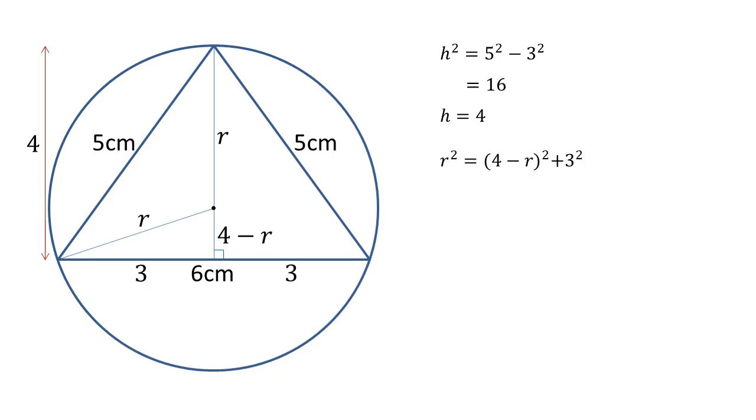Expanding the bracket on the right-hand side, we get 4 squared is 16 minus two lots of 4R is 8R plus negative R squared, which is R squared, and we've got that plus 9 from the 3 squared on the end.